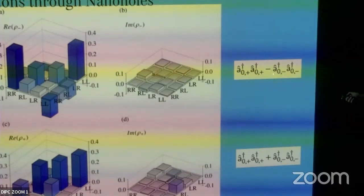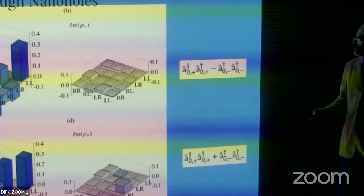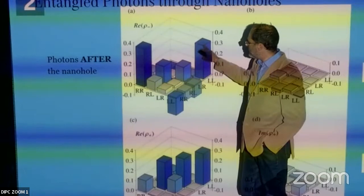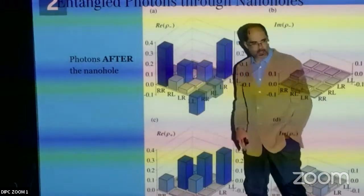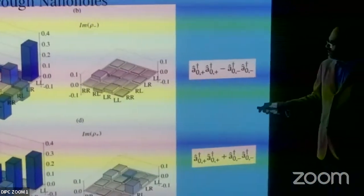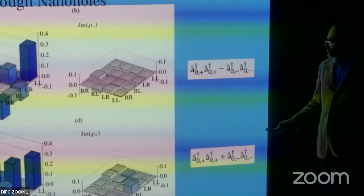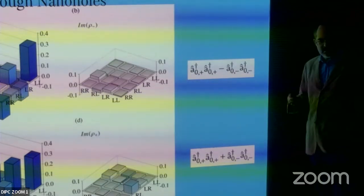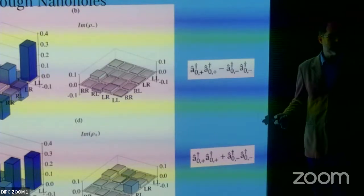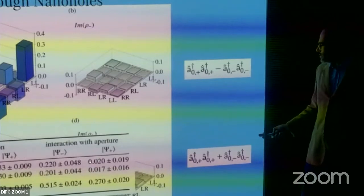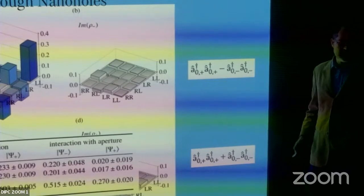After going through the nano-hole, the quantum phase changes dramatically. For one state, the two big pillars remain and you can still distinguish the minus sign — though with more noise due to photon losses. For the other state, the coherence is completely destroyed: the two pillars increase a lot, showing how this quantum phase can completely change the state after passing through the nano-hole.